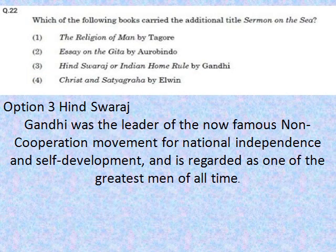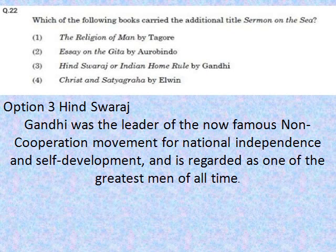This question belongs to Indian literature: which of the following books carried the additional title 'Sermon on the Sea'? Option 3, Hind Swaraj or Indian Home Rule by Gandhi, is the correct answer. Gandhi was the leader of the famous non-cooperation movement for national independence and self-development. Sermon on the Sea, sometimes entitled Indian Home Rule or Hind Swaraj, was written by Gandhi in South Africa in 1909 and reveals his views on civilization and on soul force.